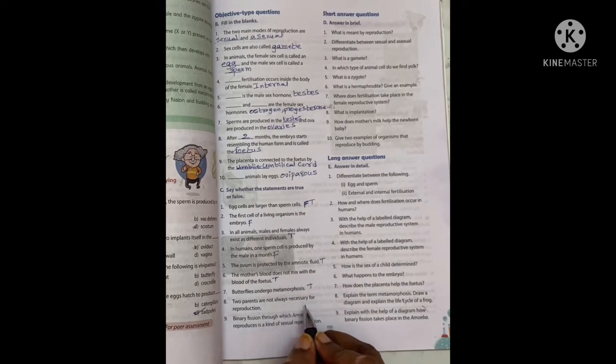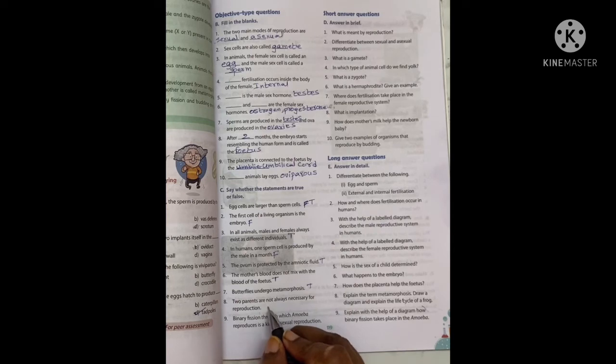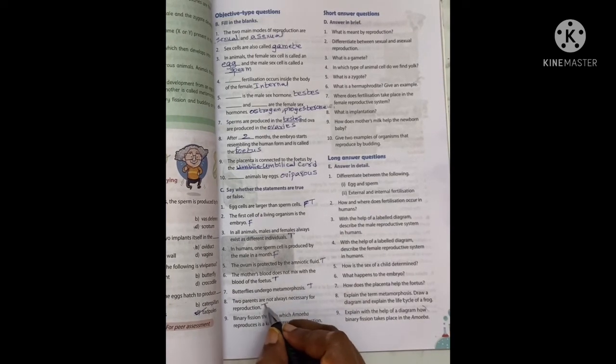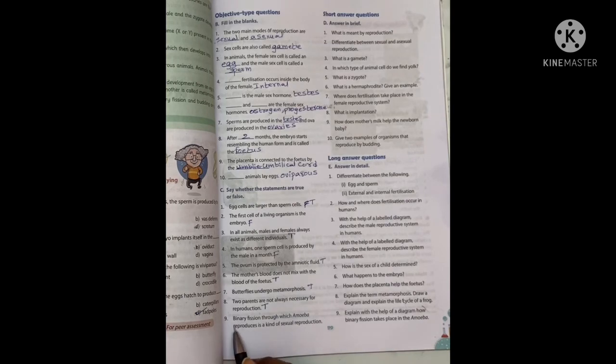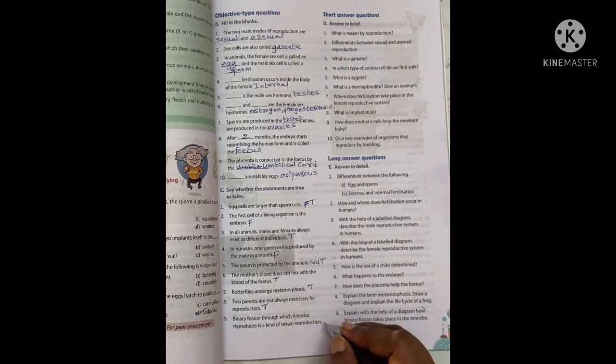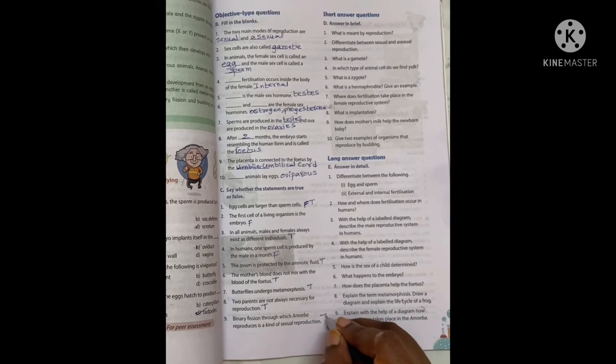Two parents are not always necessary for reproduction. True. Binary fission, by which amoeba reproduces, is a kind of asexual reproduction. True.